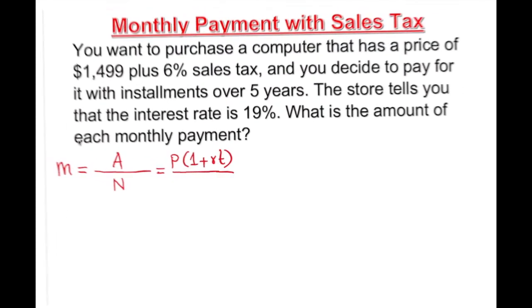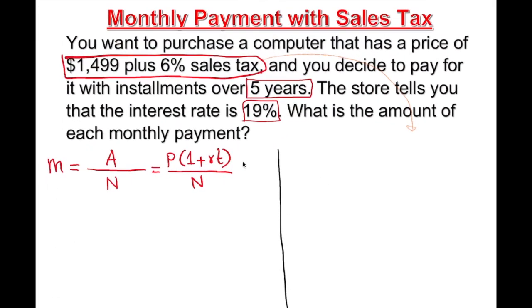So P is going to be $1,499 plus the tax. Let's figure out how to find the tax. Tax is going to be 1,499 times the rate. What is the rate? 6% is the rate, so that will give us P equals 1,499 plus the tax.